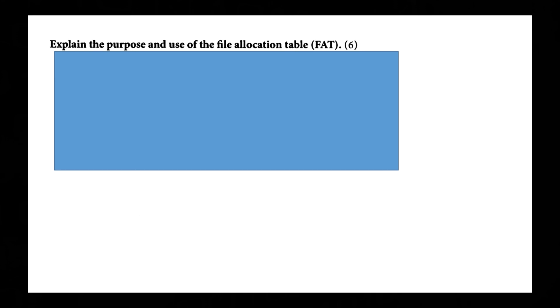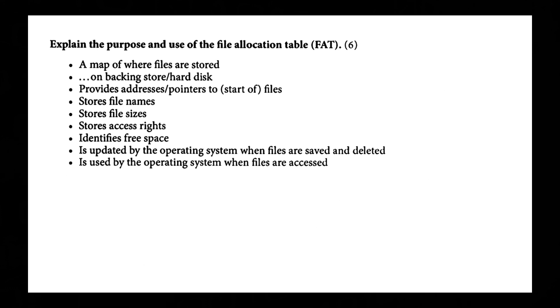Explain the purpose and use of file allocation tables — the FAT system. It's six marks. A map of where files are stored on backing store or hard drive; provides addresses or pointers to the start of files; stores file names; stores file sizes; stores access rights; identifies free space; is updated by the operating system when files are saved and deleted; is used by the operating system when files are accessed.